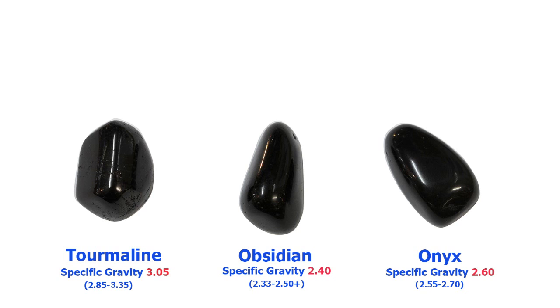An excellent example to use for this test is the black stones Tourmaline, Obsidian, and Onyx. Because they each have a unique specific gravity, this test will show us which one is which.